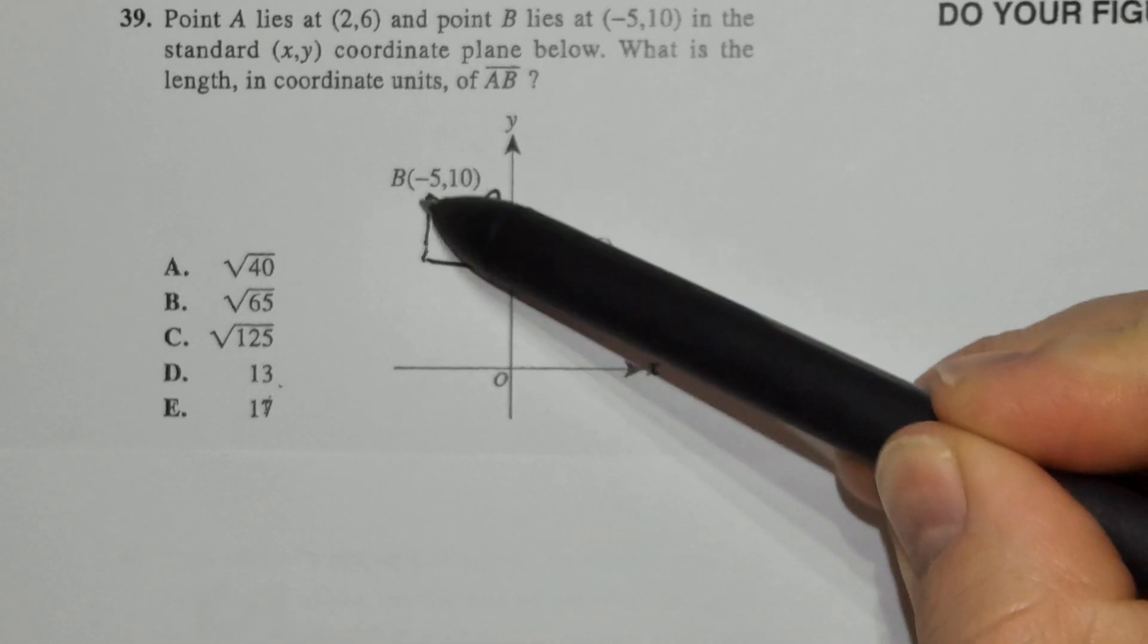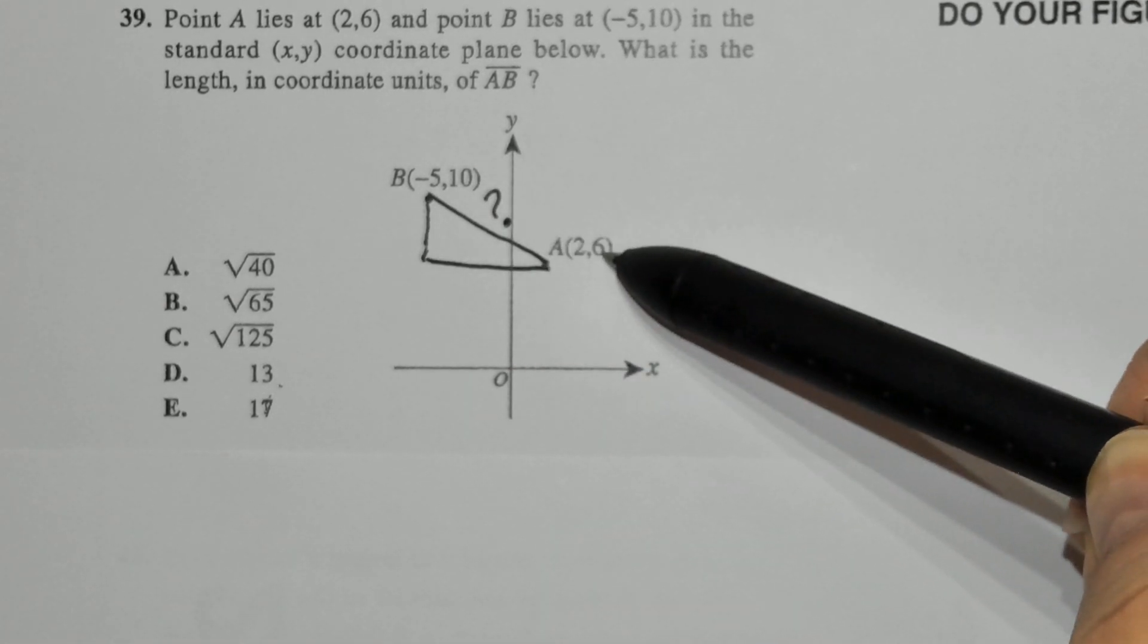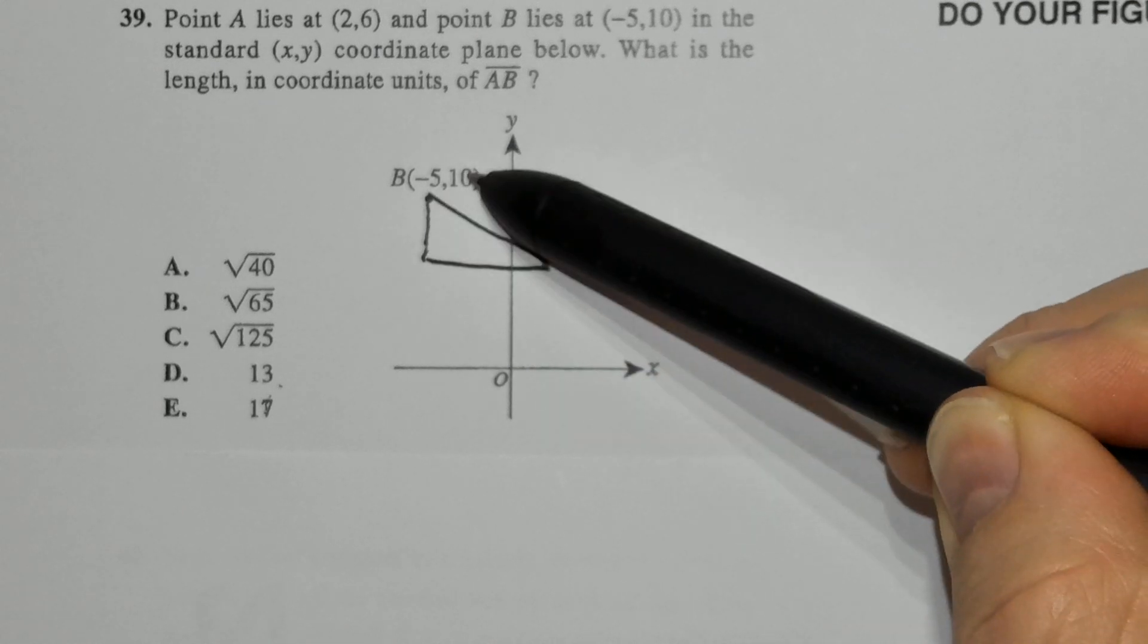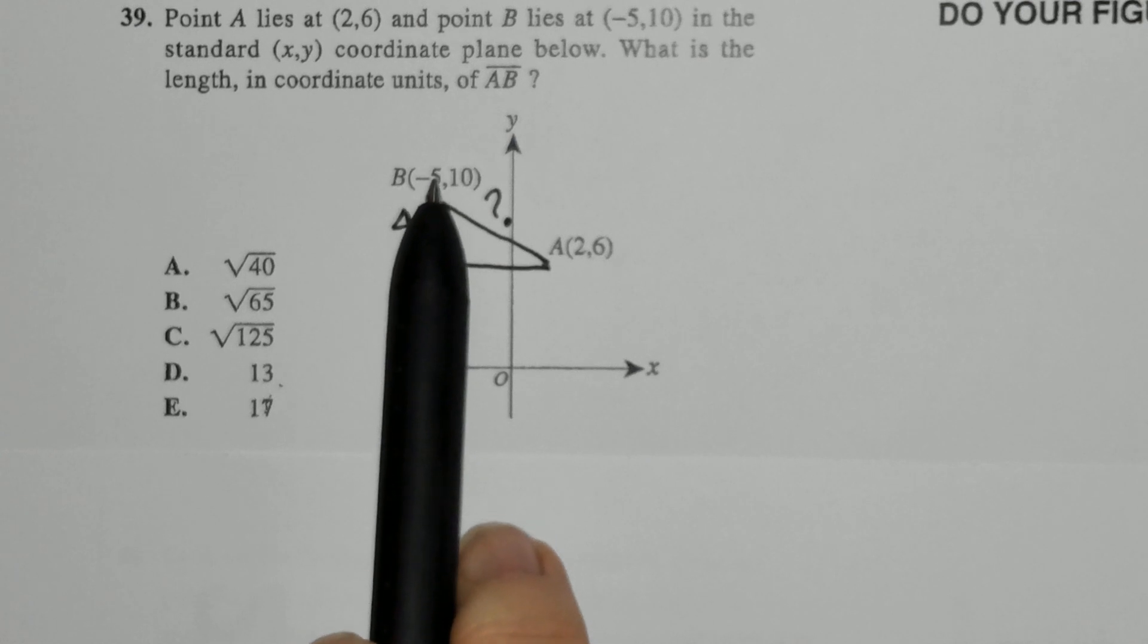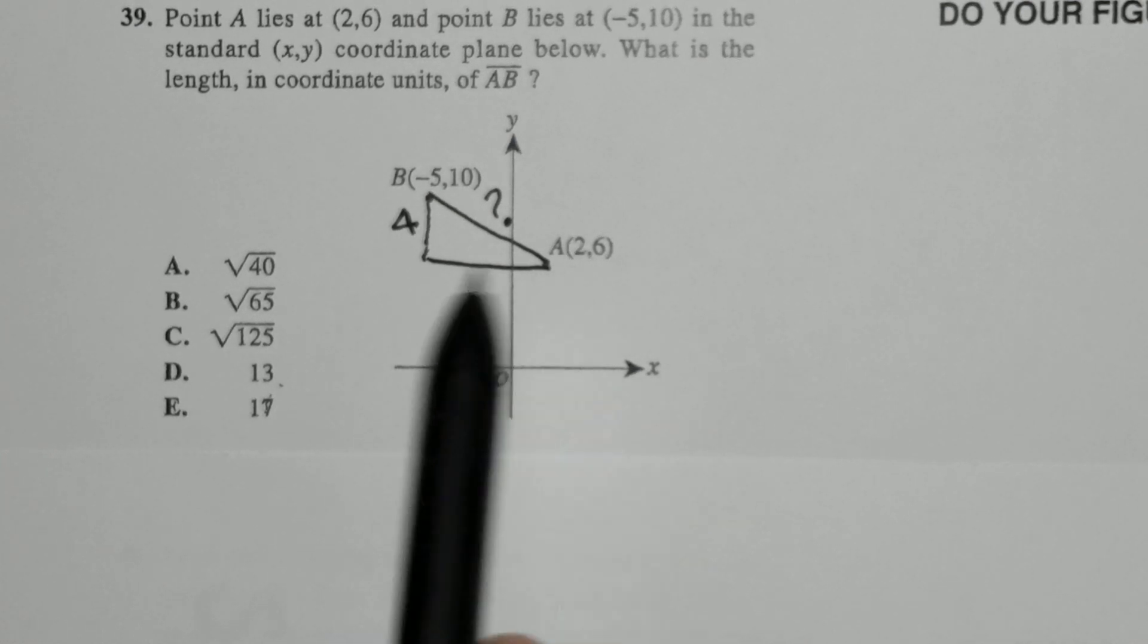I know this distance can be achieved by knowing the distance from 6 up to 10, which is 4. And now in terms of the x values, what is the distance from negative 5 to positive 2?